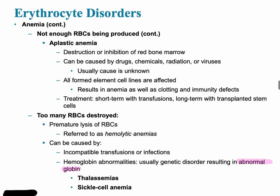There are also genetic causes of anemia, and another type called aplastic anemia. Aplastic anemia involves a malfunction of the red bone marrow, usually caused by radiation, drugs, or possibly viruses.